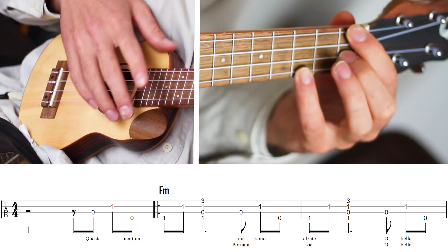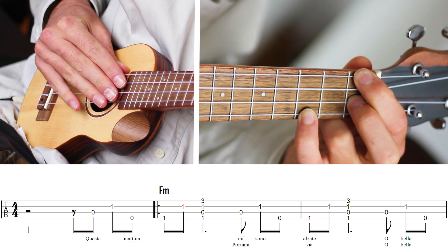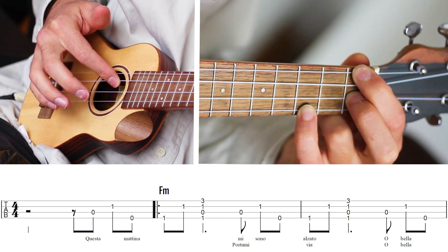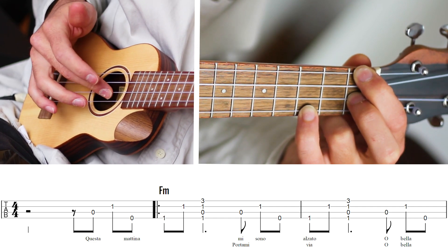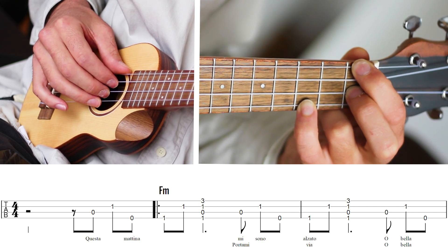Alright, so we start grabbing the F minor chord. And with the right hand, I'm positioning my fingers so that the thumb is always on the G string, pointing finger is always on the C string, middle finger always on the E string, and ring finger always on the A string. Like this.